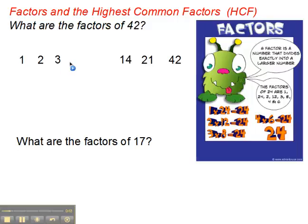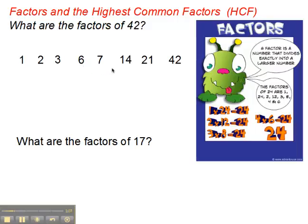4 doesn't divide into 42. 5 doesn't divide into 42. 6 does — 6 and 7 are 42, so 6 and 7 are also a factor pair. And then we've covered them all, because if we went on, we'd start repeating ourselves. 7 divides into 42, sure, but we've already got that factor pair, 6 and 7. So there are 8 different factors for 42.